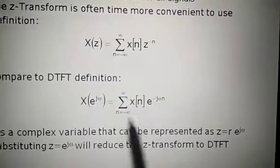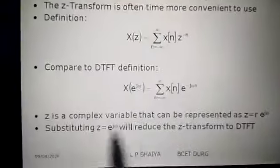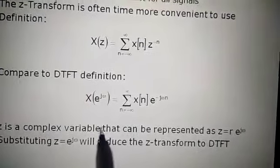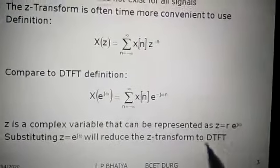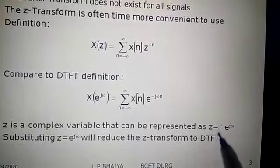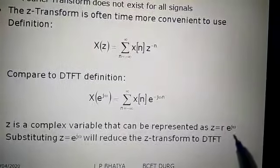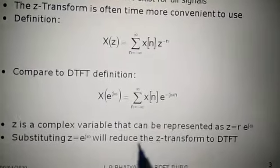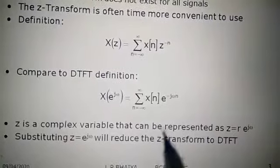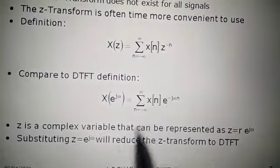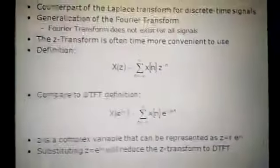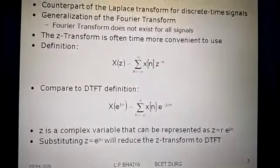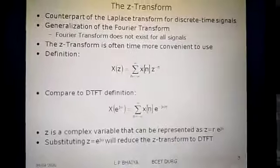This is the discrete time Fourier transform while the other is the Z transform. Z is a complex variable that can be represented as Z = R · e^(jω). Always remember this in Z transform: Z represents a complex variable equal to R · e^(jω), where R is the magnitude and e^(jω) is the complex part. Substituting Z = e^(jω) will reduce the Z transform to DTFT. So the Z transform can be converted into discrete time Fourier transform by putting Z = e^(jω). If a question is asked about the relation between DTFT and Z transform, you have to mention that at Z = e^(jω) it reduces to the discrete time Fourier transform.